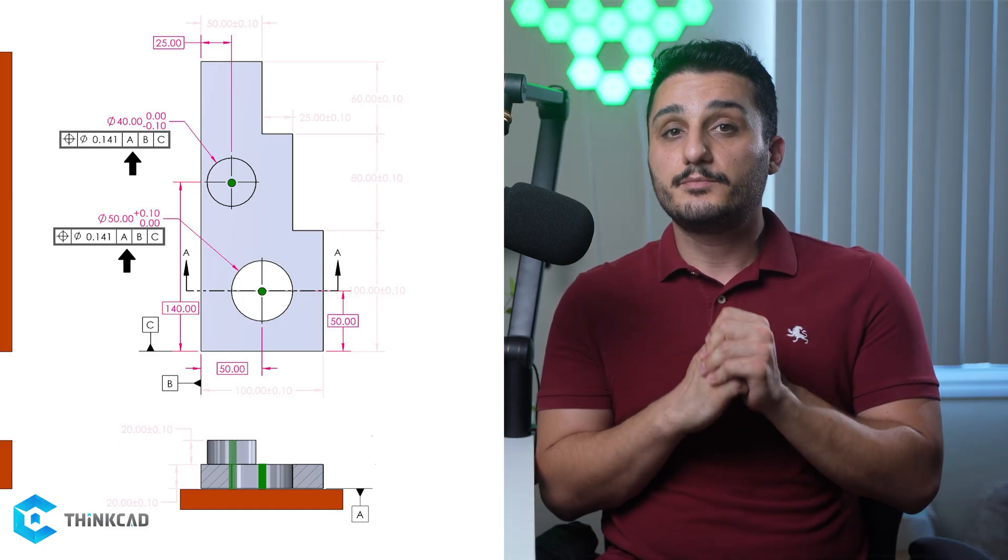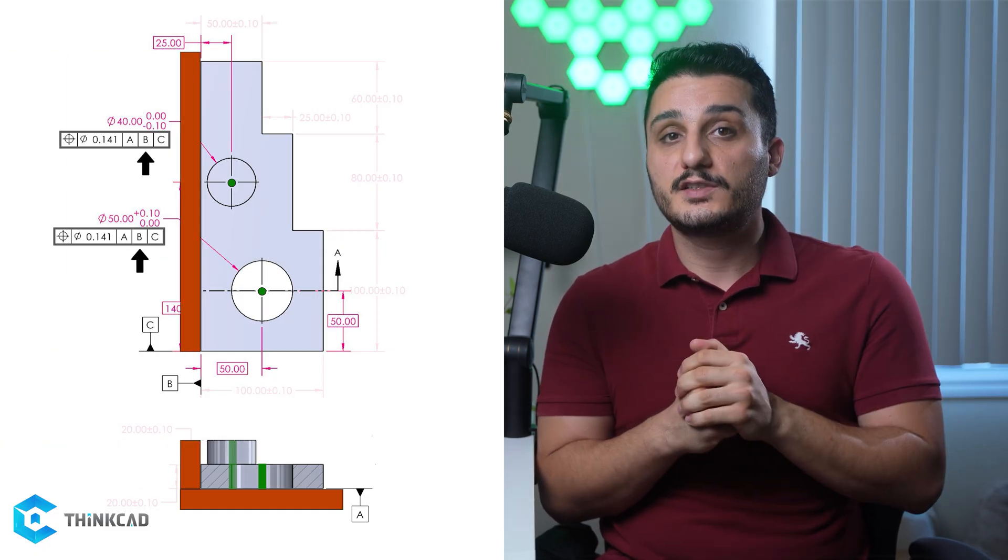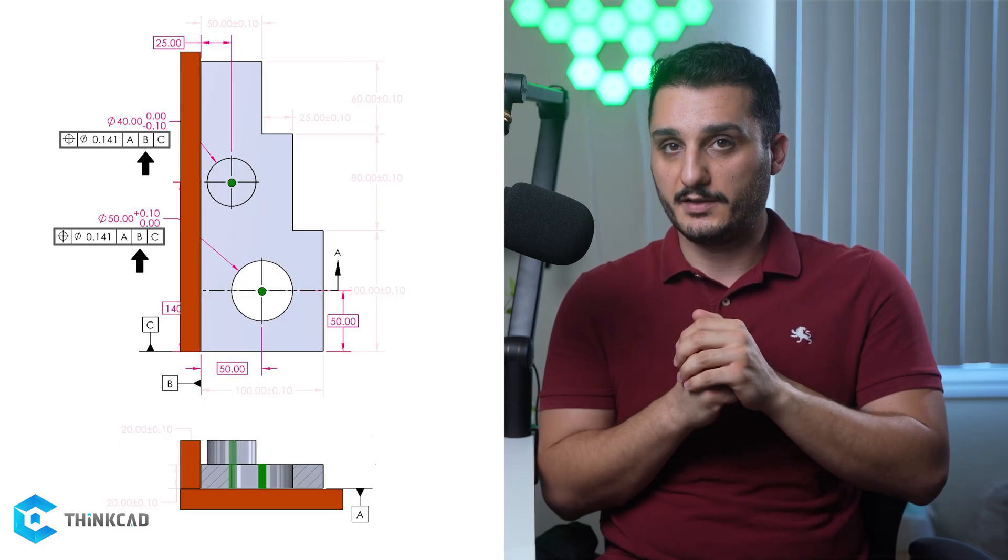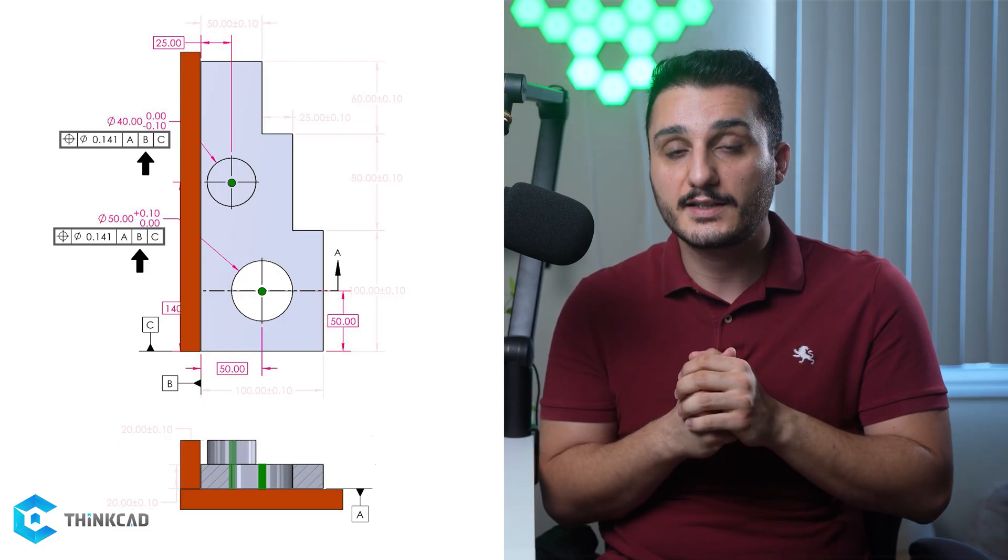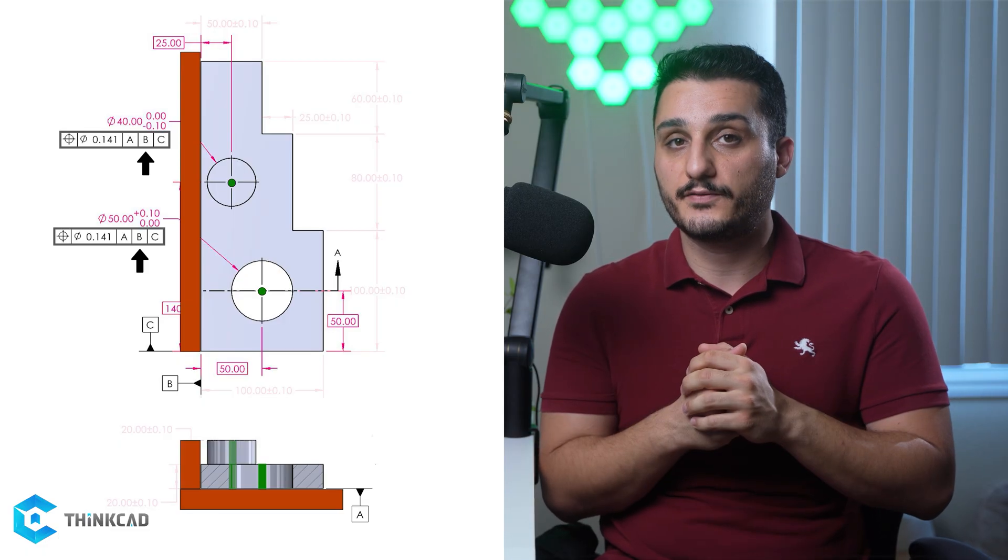Then you restrict datum B by using a datum feature simulator perpendicular to datum A. This gives you a minimum of two points of contact and will limit two more degrees of freedom.